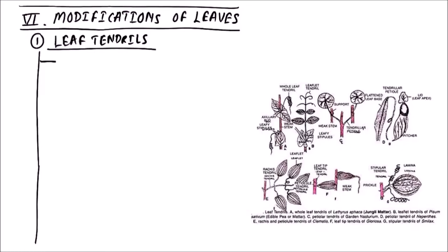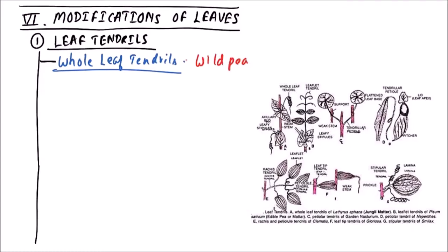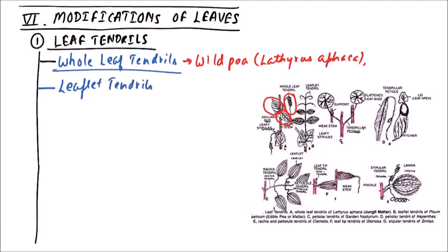The first type is whole leaf tendrils. The example of whole leaf tendrils is wild pea, that is Lathyrus aphaca. In Lathyrus aphaca, stipules become foliaceous for photosynthesis, as the leaf is completely modified to a tendril. So photosynthesis is done by the stipules, which become leaf-like or foliaceous.